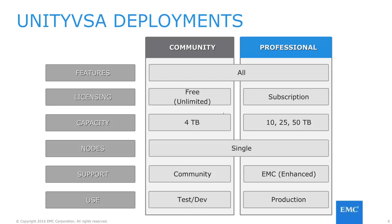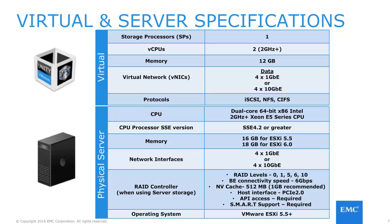Here are the Unity VSA specifications, as well as the required server hardware specifications to run a Unity VSA. A Unity VSA instance is a single virtualized storage processor, which utilizes two virtual CPUs, 12GB of memory, and 4x1GB Ethernet or 10GB Ethernet virtual network interfaces for network connectivity. Unity VSA supports iSCSI, NFS, and SMB for available storage protocols.